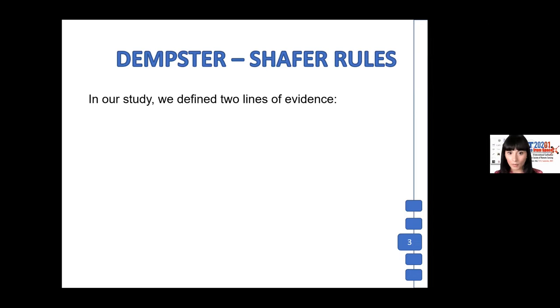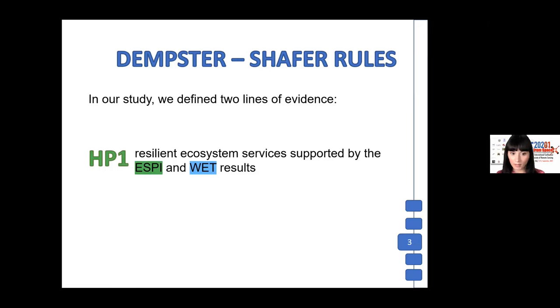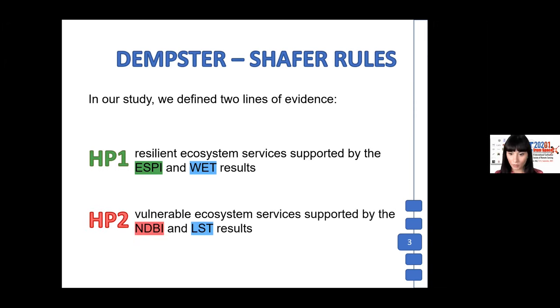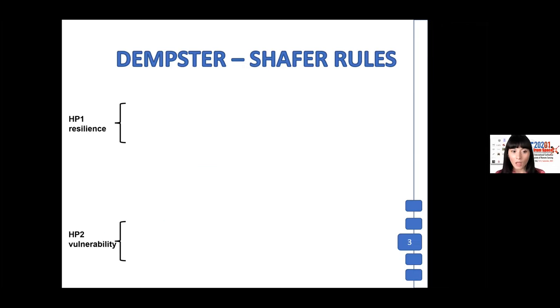In our study, we defined two types of lines of evidence. The first is the resilient ecosystem services supported by the ESPI and the wetness results, and the vulnerable ecosystem services supported by the NDBI and the LST results.